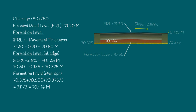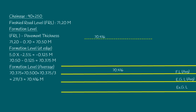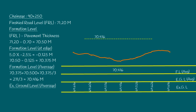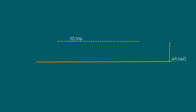Now let us see the field measurements at these chainages. After cleaning the site, the existing ground levels are taken from the centerline to 7.5 meters at both sides at every 2.5-meter intervals and recorded in the drawing. To ease calculations, the average of this existing ground level is calculated for further use. Here, the average of the existing ground level is 69.56 meters. The average formation level minus average existing ground level gives the average depth of filling, which is 70.416 minus 69.56, equal to 0.856 meters.